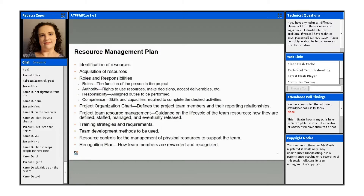The resource management plan is something that you're going to have as an output of these processes as you're working on this. Part of the resource management plan is going to include a resource schedule. It is an overall component of the project management plan itself. In this resource management plan, it's going to describe how project resources are required, how they're allocated, and how they're monitored and controlled.